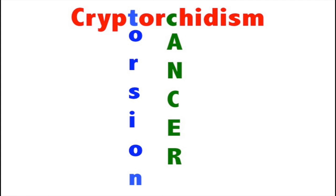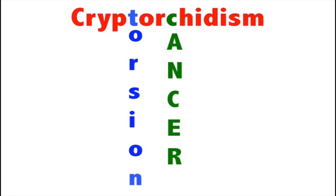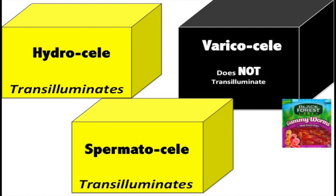Cryptorchism — undescended testicles — is linked to torsion and testicular cancer. Torsion is an acute presentation; cancer is gradual. If a testicle is swollen, hydrocele and spermatocele both transilluminate, while varicocele will not. Varicocele changes with Valsalva and is described as a bag of worms — the V stands for very dark and very wormy.